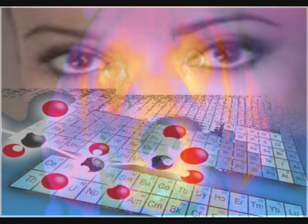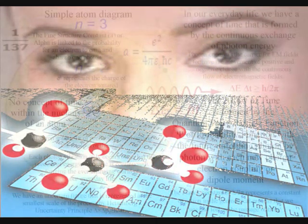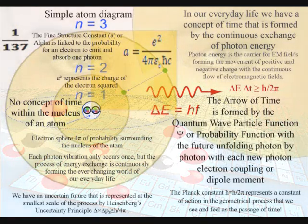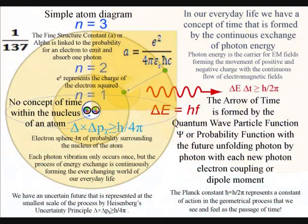Reason number three. Whenever the atoms bond or break, there is an exchange of light photon energy. Therefore, it is impossible for time to be reversible.